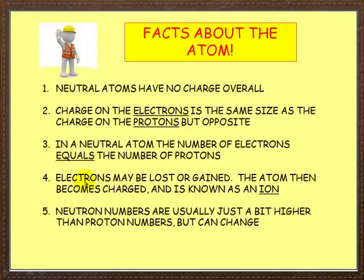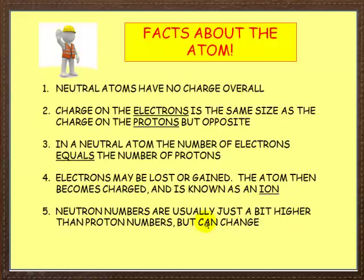However, sometimes atoms may lose or gain electrons. If electrons are lost or gained, then the atom overall becomes charged. And this is known as an ion — note the spelling, I-O-N. Some atoms become positive ions by losing electrons. Some atoms become negatively charged by gaining electrons. Neutron numbers are usually just a bit higher than proton numbers, but can change.